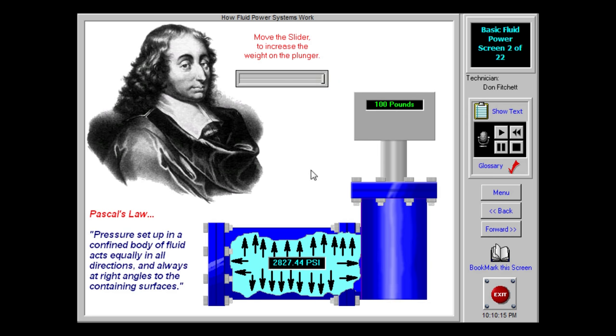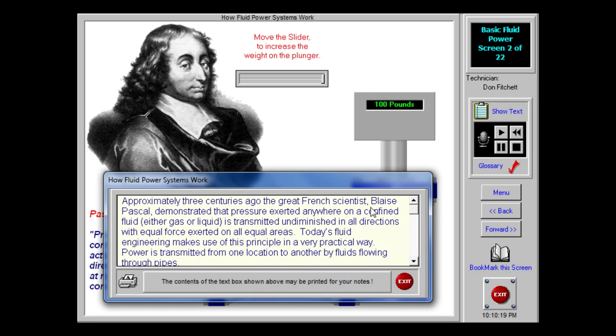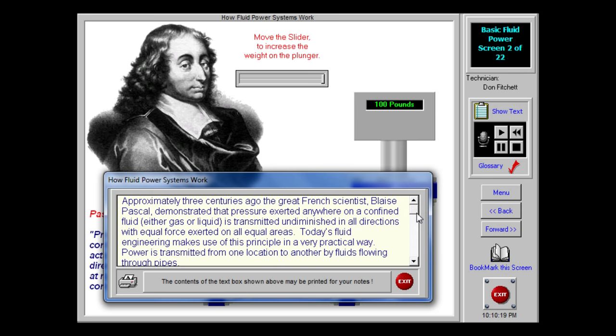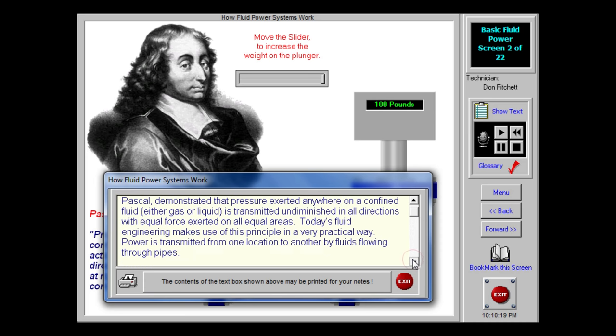Today's fluid engineering makes use of this principle in a very practical way. Power is transmitted from one location to another by fluids flowing through pipes. The input source of a fluid system is always electrical or mechanical. The power is converted to an equivalent amount of fluid power by means of an air compressor or hydraulic pump.